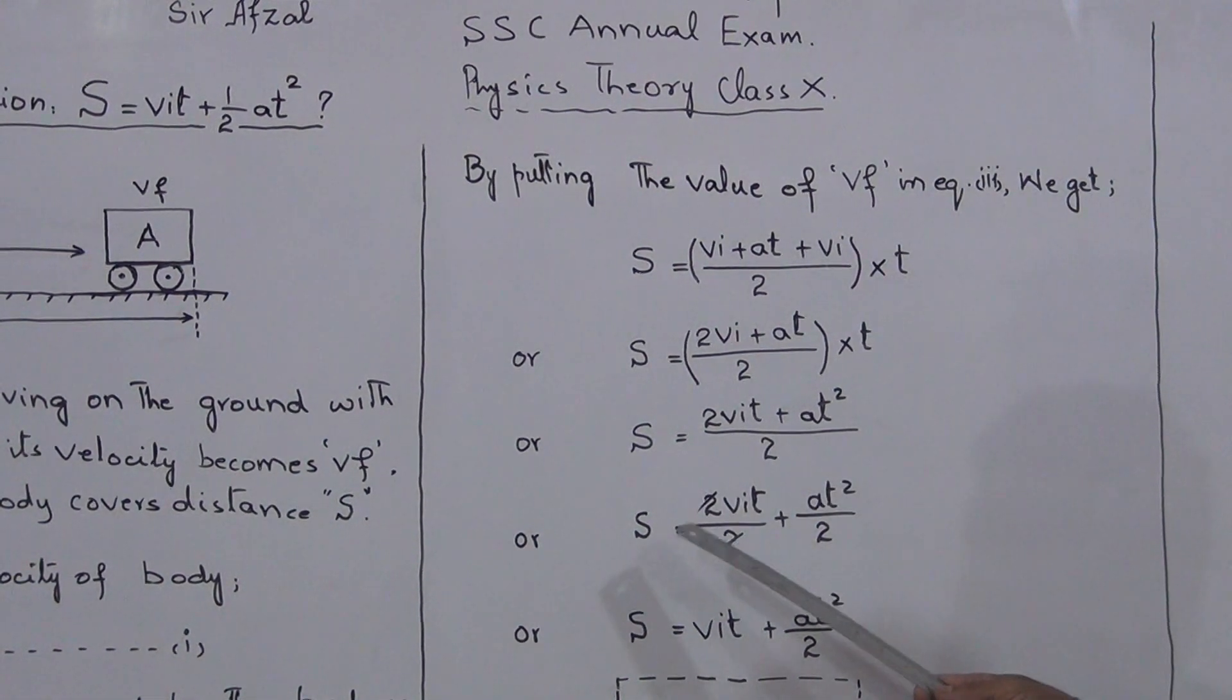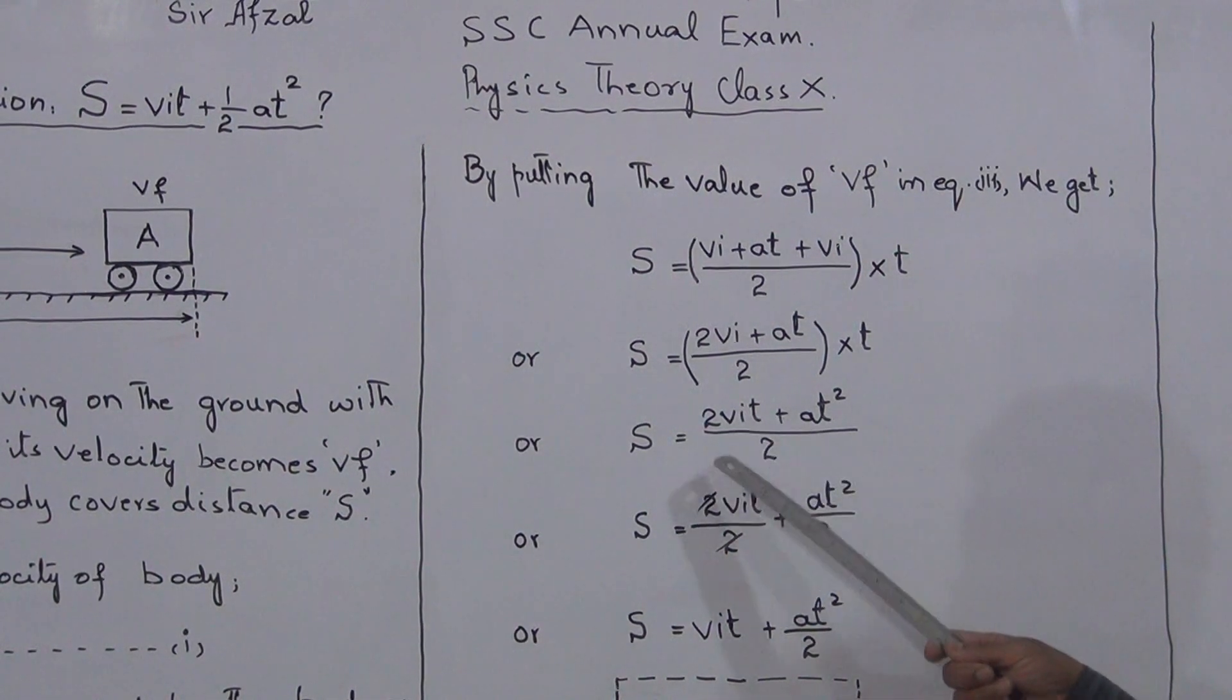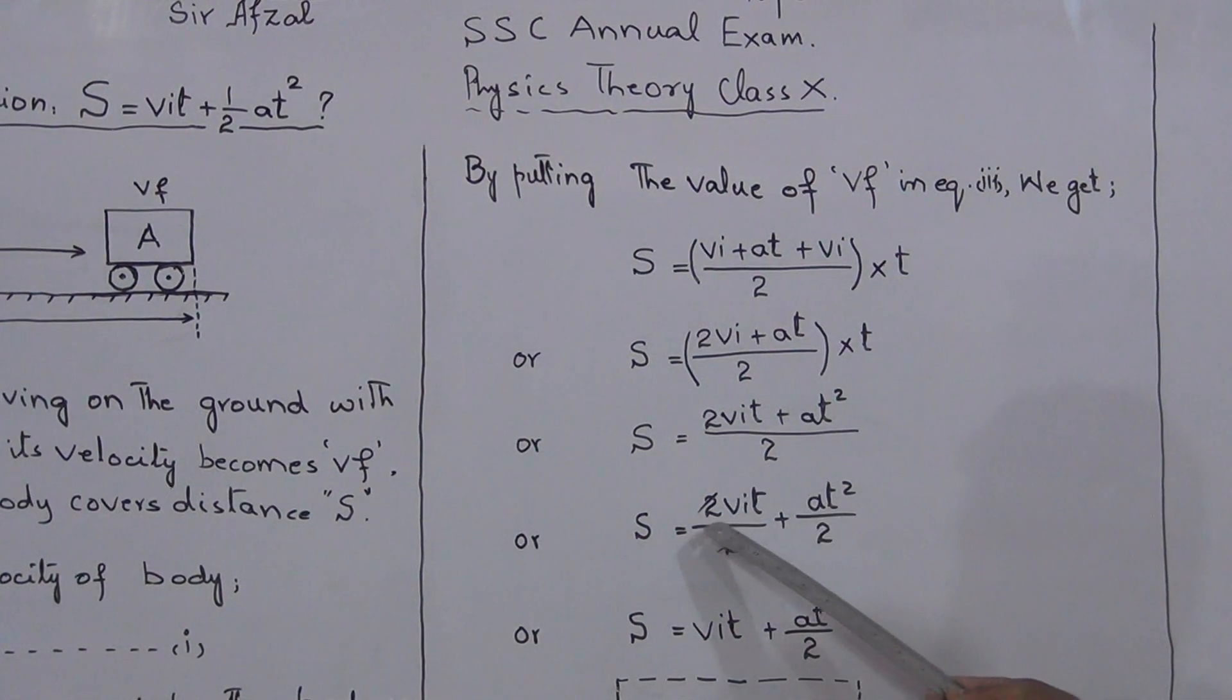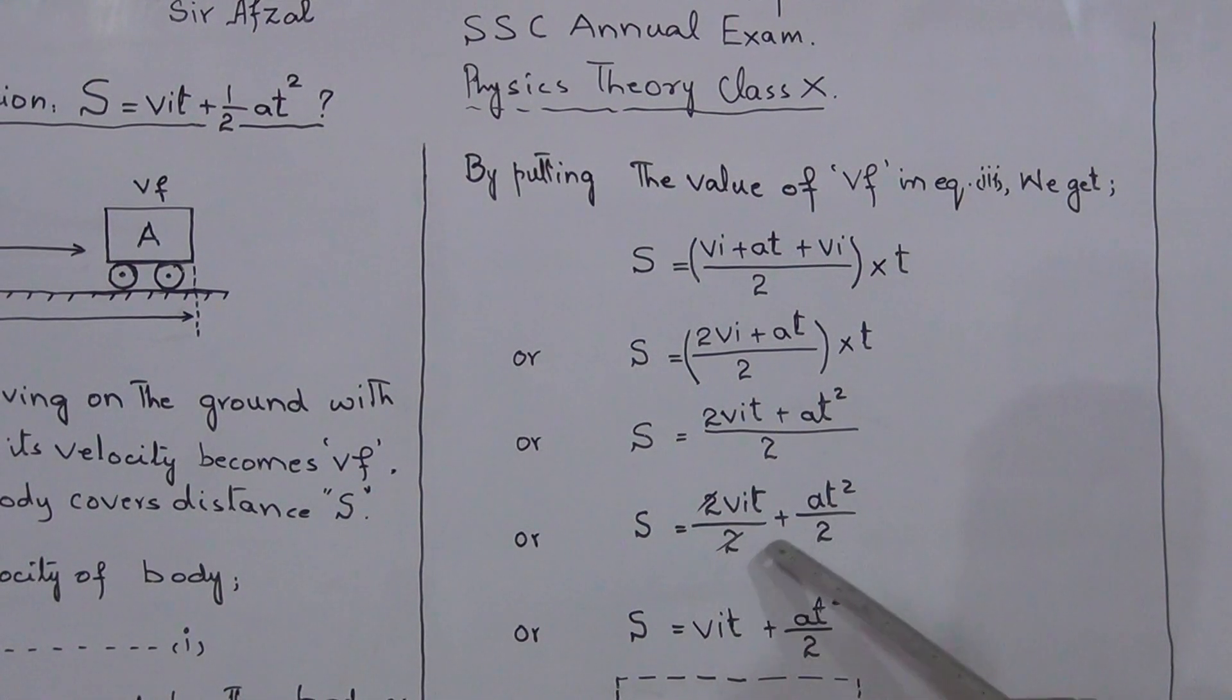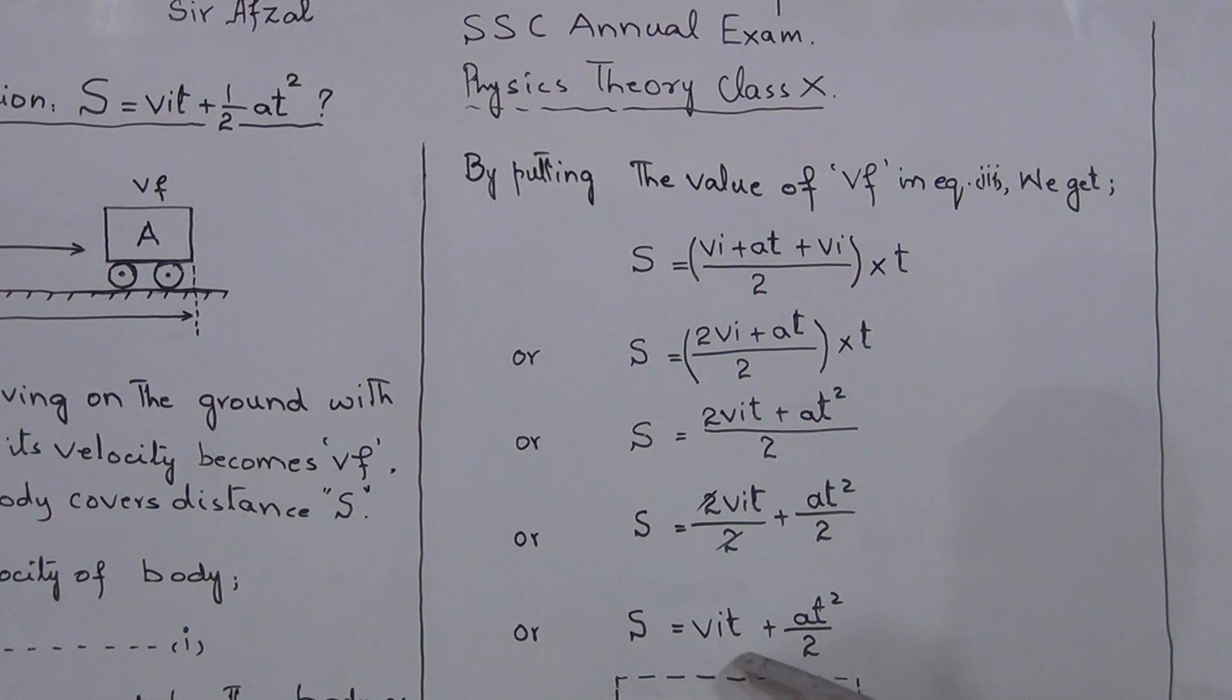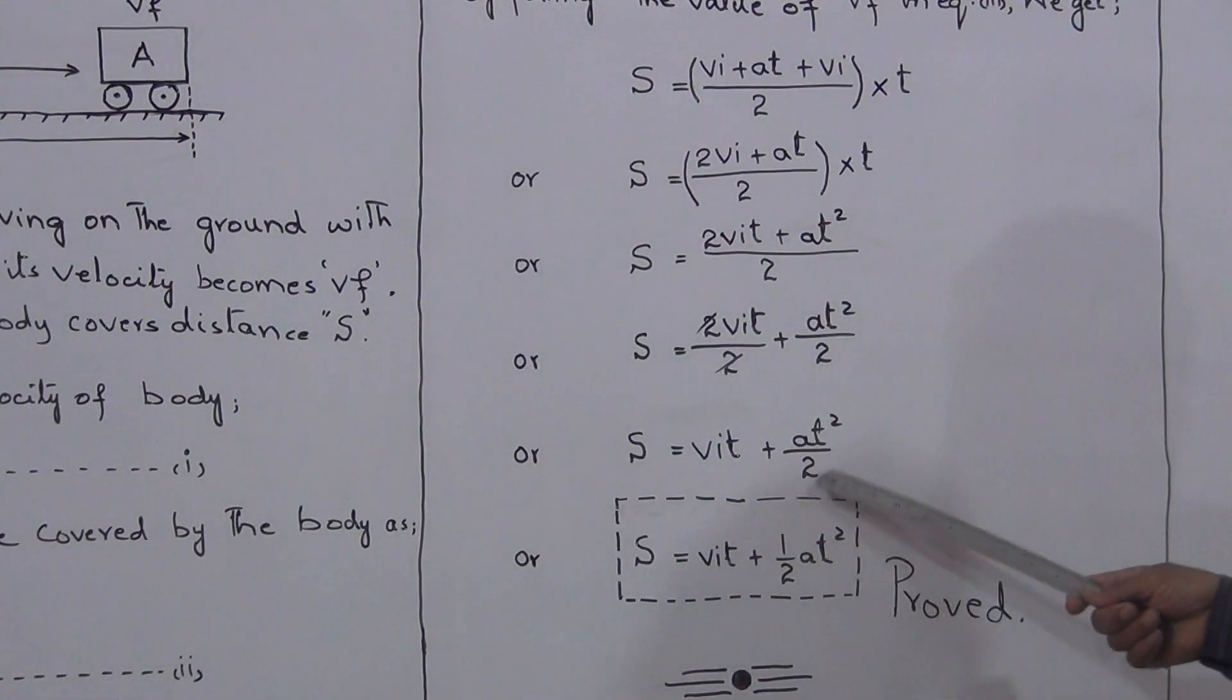Now this is the common LCM, 2 is the common LCM. We will take it as an individual so it will become 2VIT/2 + AT²/2. 2 and 2, they are cancelled.